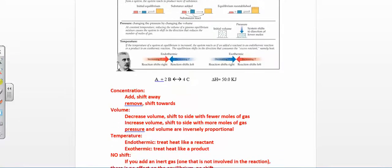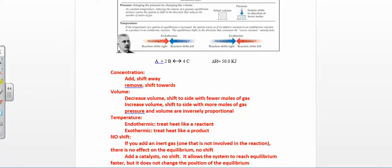So how does changing the concentration affect things? If you add something — increase the concentration — it's going to shift away from that. Suppose I add A, which is a reactant. If I increase A, now I have too much A; I want to use up A and shift away from it, so I'm going to make more products and the reaction shifts to the right. What if I remove A? Well, then I want to make more of A, so it shifts towards A, towards the reactants. So if you increase the concentration of something, shift away from it; if you remove it, shift towards it.